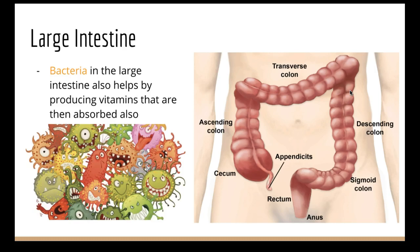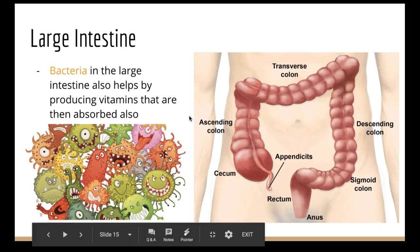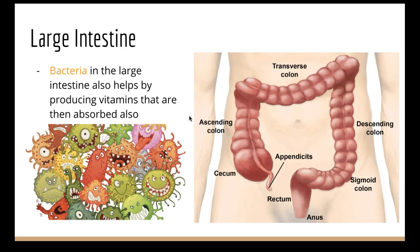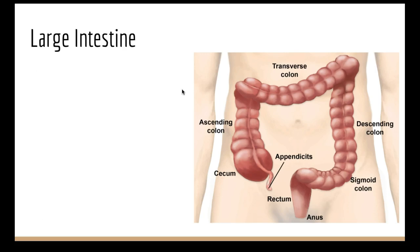The large intestine also contains bacteria, and we have a symbiotic relationship with them. Bacteria break down fiber that we can't digest and use it as food for themselves; in return they give us vitamins such as vitamin C, vitamin D, and vitamin B12. If you don't have the proper ratio of gut bacteria you may experience intestinal issues, digestion problems, constipation, or diarrhea.